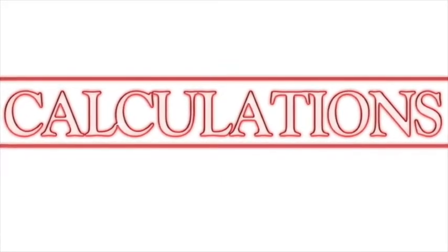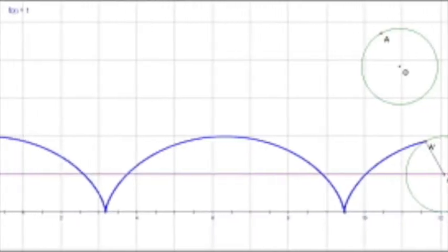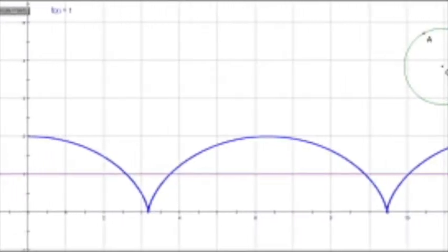In order to make the Brachistochrone graph, we had to trace a cycloid with the help of a 30-centimeter circle.